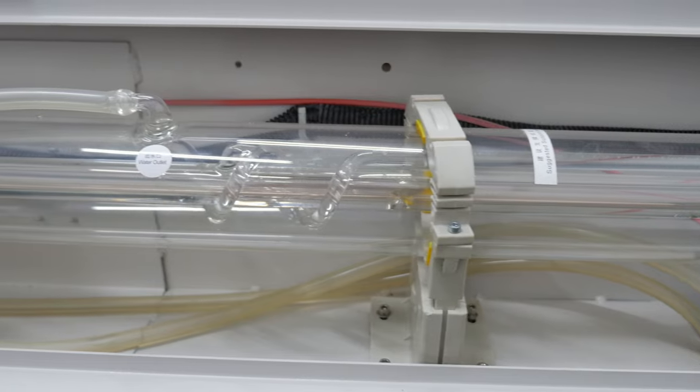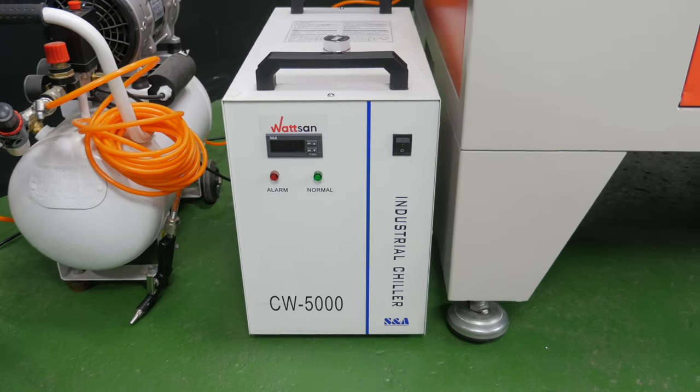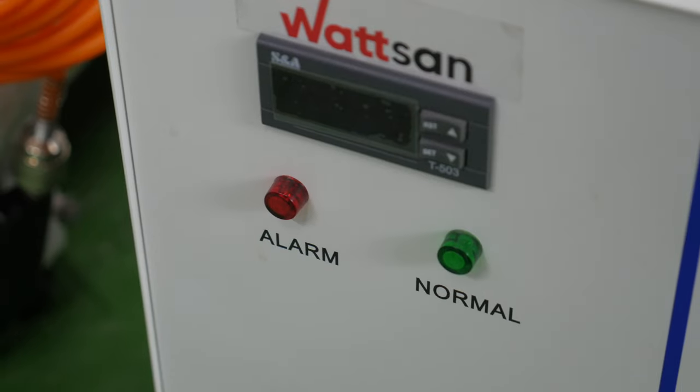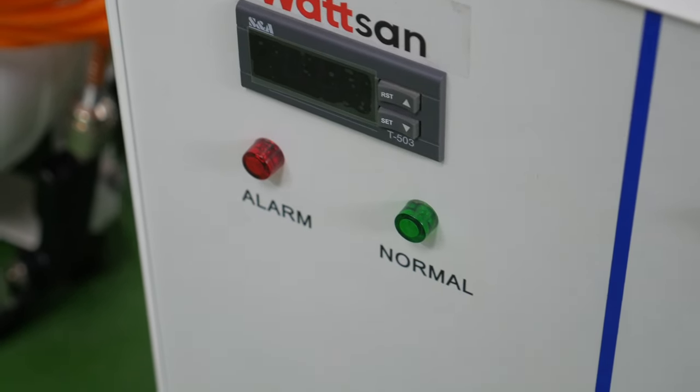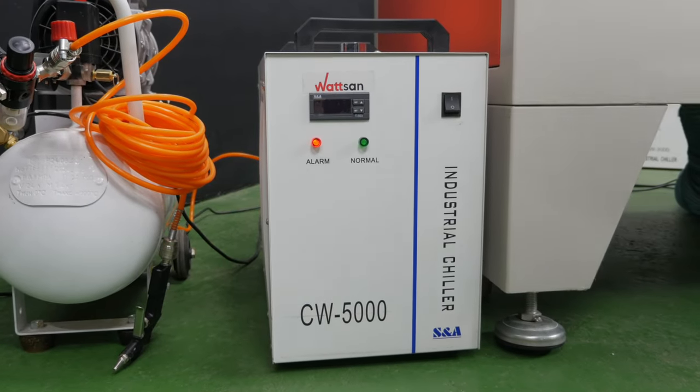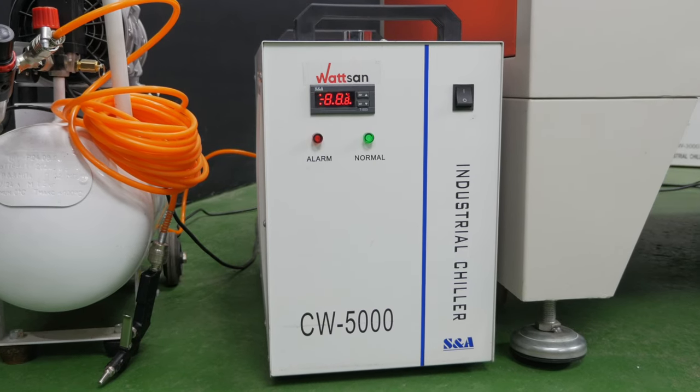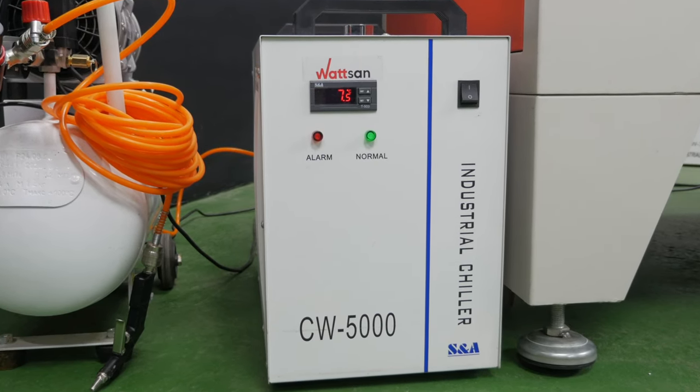For a more comfortable operating process, it is recommended to buy a chiller, for example CW5000. And you will not have to think about laser tube heating too much. The chiller has a closed circuit, and the water in it is not in contact with the outside environment. However, do not forget to switch it on before you start.